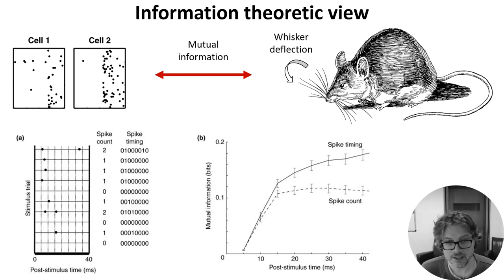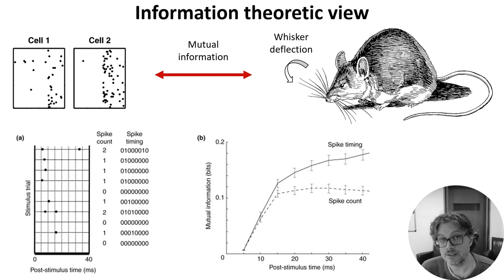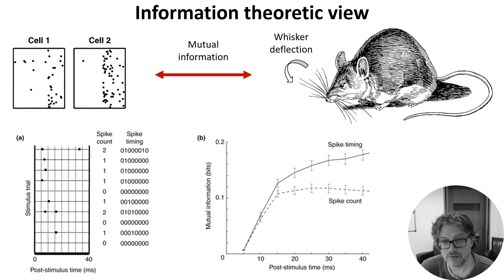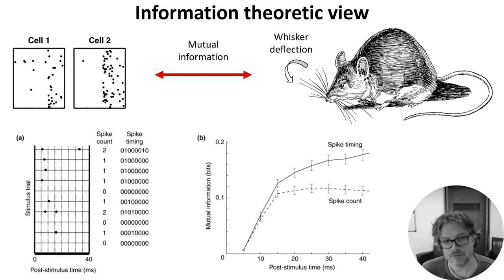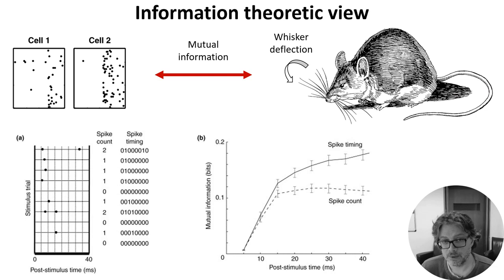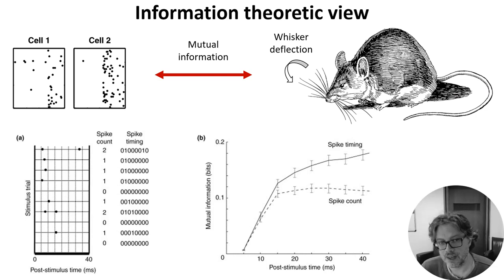This is a finding that has been replicated many times in different sensory modalities and different species. At first, this looks like a knockdown argument in favour of spike timing, but it's not quite as clear cut. Firstly, it's really hard to measure mutual information in these very high dimensional settings, so it's hard to be 100% confident that what we've done is meaningful. Secondly, just because the information is there doesn't mean that the animal makes use of that information.